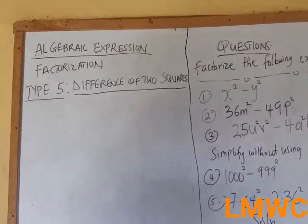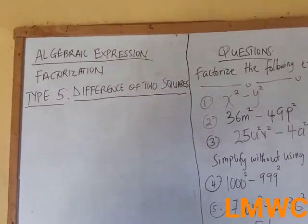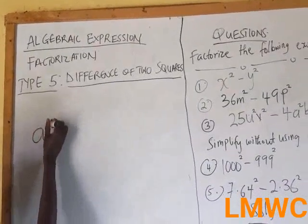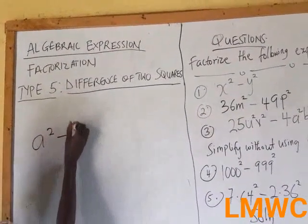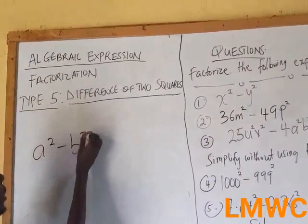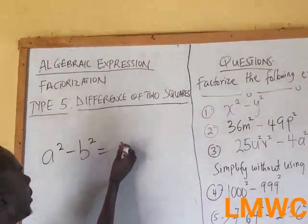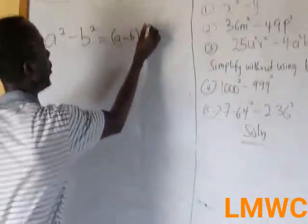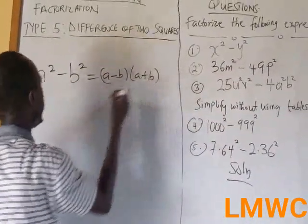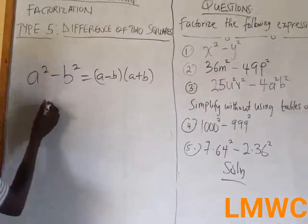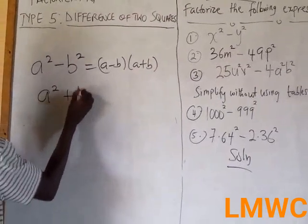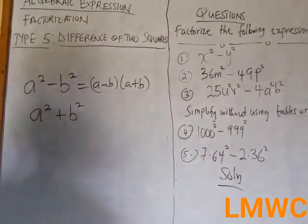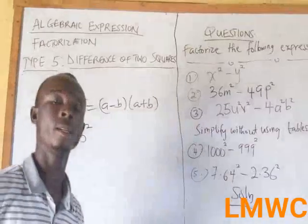An expression is said to be a difference of two squares if it is given as a squared minus b squared, and this is expressed as (a minus b)(a plus b). Note that a squared plus b squared is not possible under difference of two squares.